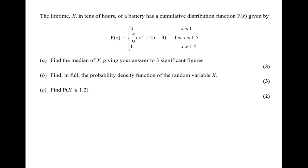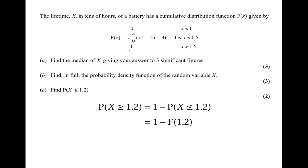The next part asks us to find the probability that x is greater than or equal to 1.2. We can write this as 1 minus P(x ≤ 1.2), which equals 1 − F(1.2). Since F(1.2) = 4/9 × (1.2² + 2 × 1.2 − 3), this turns out to be 1 − F(1.2) = 47/75.